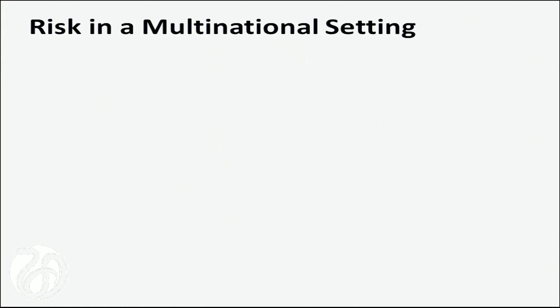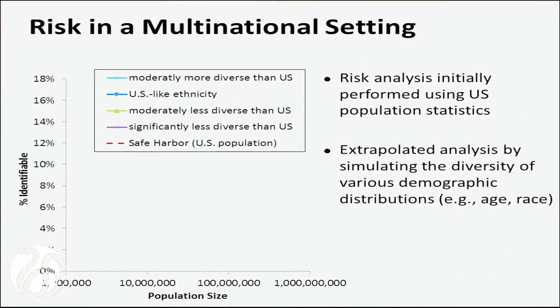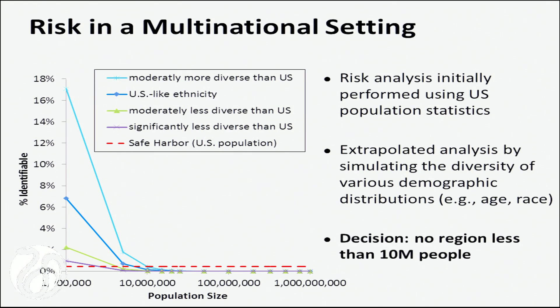However, the U.S. analysis didn't necessarily reflect other countries, so we extrapolated to simulate the diversity of various demographic distributions. We looked at safe harbor as a baseline, then the U.S., then moderately more diverse, moderately less diverse, and significantly less diverse populations — because European populations tend to be much less diverse. The X-axis shows population size and the Y-axis shows percent identifiable. Based on that analysis, we concluded that regions with fewer than 10 million people could not be included in the data set.